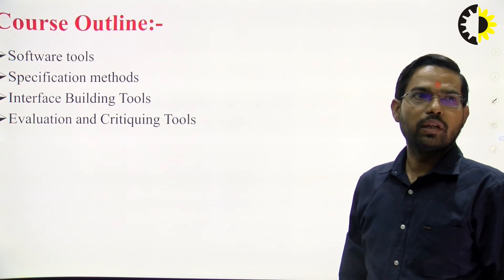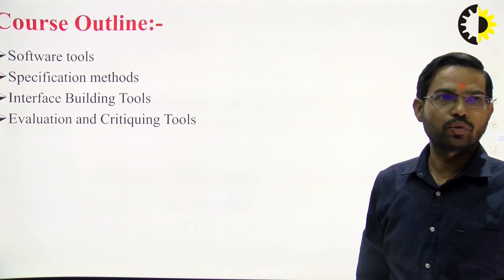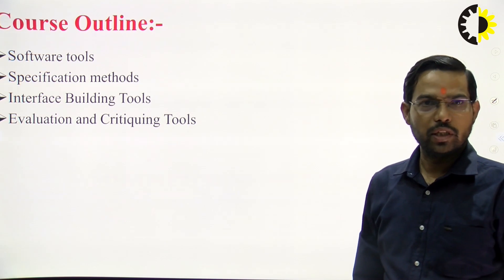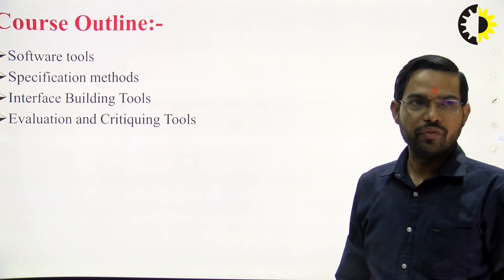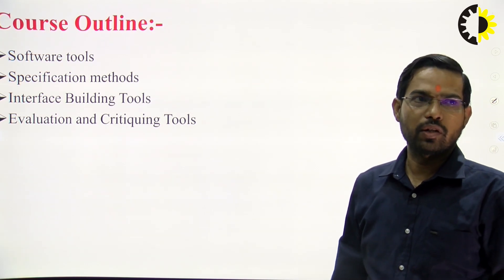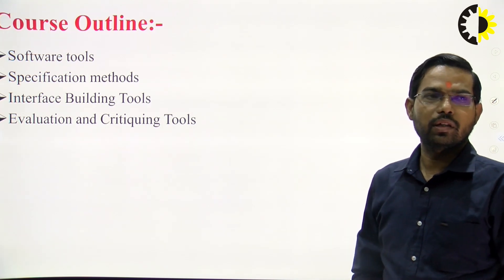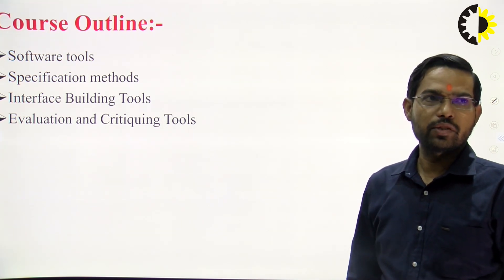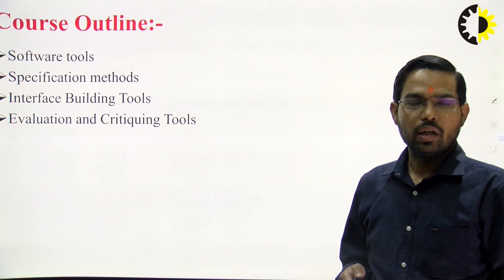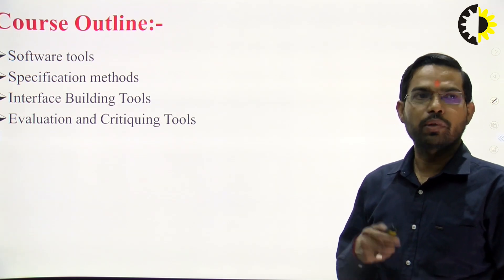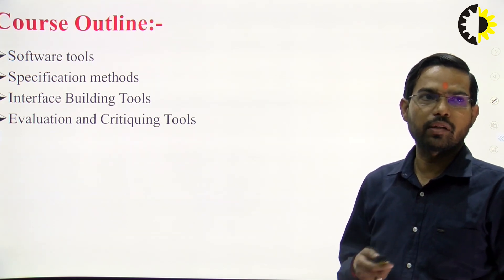The course outline basically discusses two software tools: the specification method, interface building tool, and revolution engineering tool. In this chapter, we will discuss how the human computer interface works on different tools.